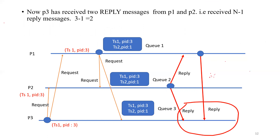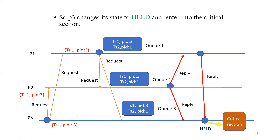Now P3 has received two reply messages from P1 and P2 — that is, N minus one reply messages. With three processes running, 3 minus 1 equals 2, so the sender P3 needs to receive two reply messages. P2's reply indicated 'not requesting critical section,' and P1 sent a reply to P3 since its request was deferred. Process P3 received two reply messages, changes its state to 'held,' and enters the critical section as shown in the diagram.